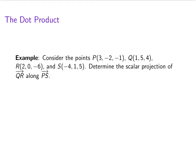P has coordinates 3, negative 2, negative 1. Q is 1, 5, 4. R is 2, 0, negative 6. And S is negative 4, 1, 5.